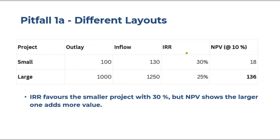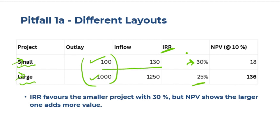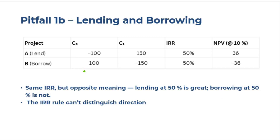Pitfall two: different outlays. When the scale of projects differs — one small, one large — IRR favors the smaller project with 30% IRR over the larger one with 25% IRR. But NPV shows the larger project adds more value: NPV of $18 versus $136. Percentages don't make you rich — cash does. So focus on NPV and always prefer the NPV rule.